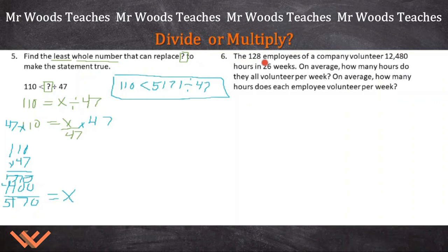Number six, the 128 employees of a company volunteer 12,480 hours in 26 weeks. On average, how many hours do they all volunteer per week? On average, how many hours does each employee volunteer per week? So we don't know how many hours each individual volunteers because it doesn't give us that data. That's why they say on average here and on average here. So we're finding two answers.